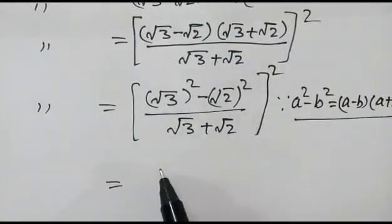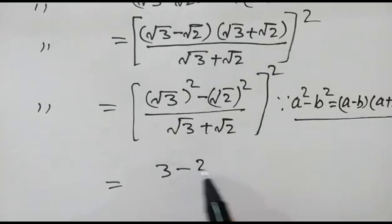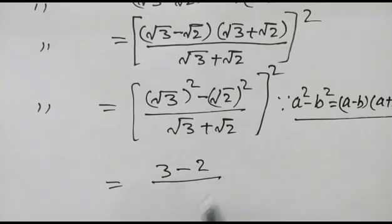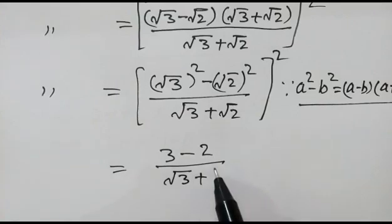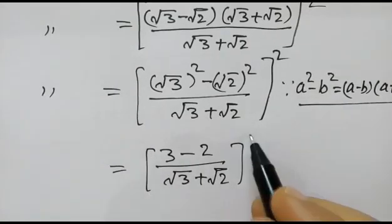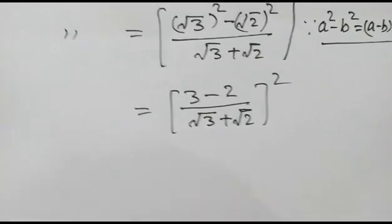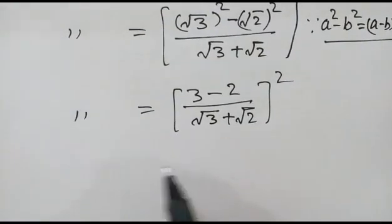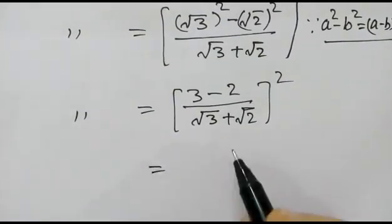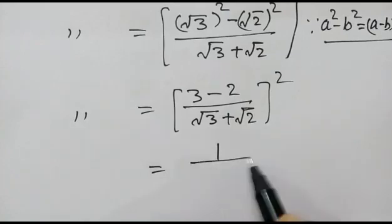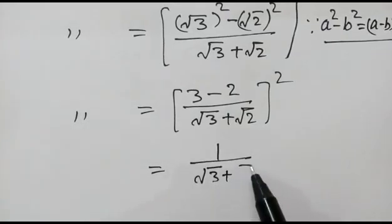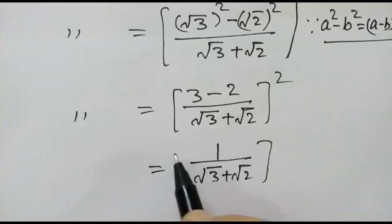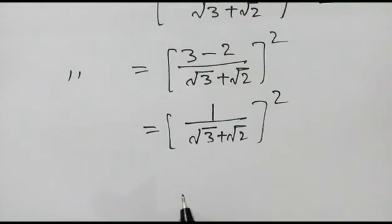Now this will become square root of 3 squared minus square root of 2 squared, over square root of 3 plus square root of 2 whole squared. This gives 3 minus 2 over square root of 3 plus square root of 2 whole squared, which is equal to 1 over square root of 3 plus square root of 2 whole squared.